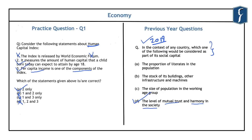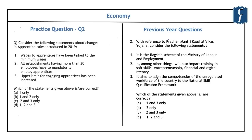To learn more about the human capital index, go through the prelims compass of this year where important indices and reports in news are discussed in detail. They can be very important from the preliminary examination point of view as many questions have been asked related to important indices in previous years. The next question is related to skill development, specifically the new changes made to the apprentice rules introduced in 2019.